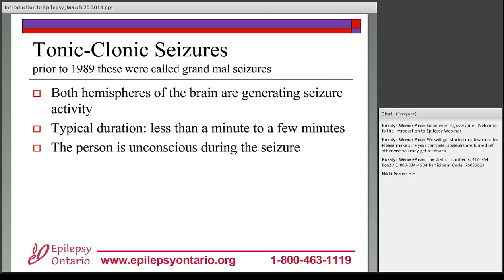A tonic-clonic seizure — previously called grand mal — involves both hemispheres and is longer in duration, typically around one to two or three minutes. During a tonic-clonic seizure the person is unconscious throughout. If they were standing, they often fall because of the sudden increase in muscle tone at the start. The second clonic phase involves rhythmic jerking motion of the muscles throughout the body.